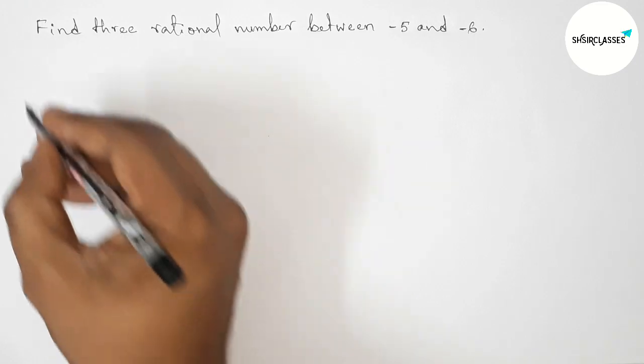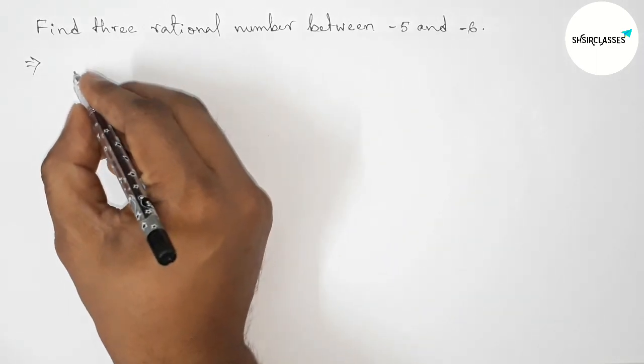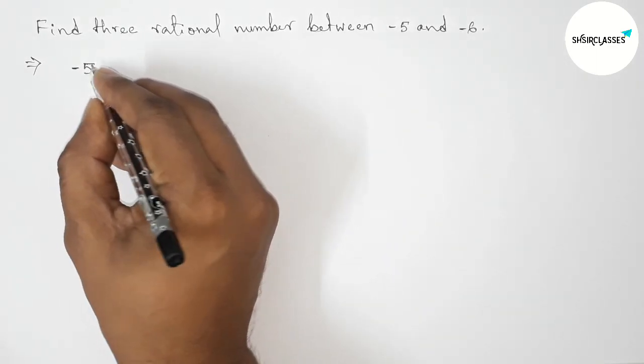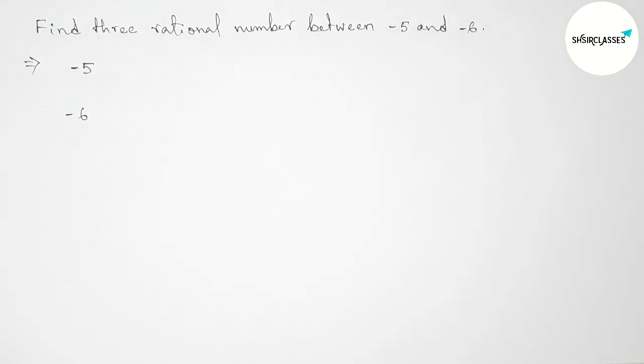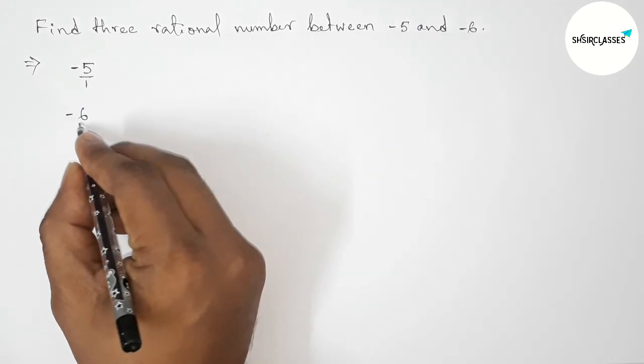First of all, let us solve this problem. Here are given two negative numbers, minus 5 and minus 6. So first write down here minus 5 and minus 6. Next we can write minus 5 as minus 5 by 1 and minus 6 as minus 6 by 1.